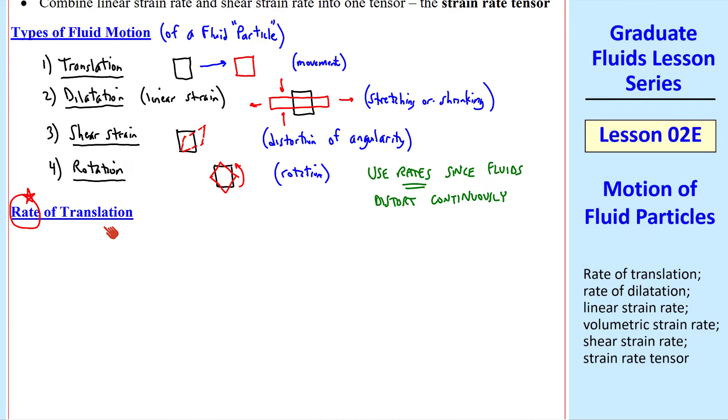Consider first the rate of translation. Suppose we have some small particle at point P. It moves at some velocity ui, and sometime later it's at point P prime. This would be at time t, and this would be at a short time later t plus dt.